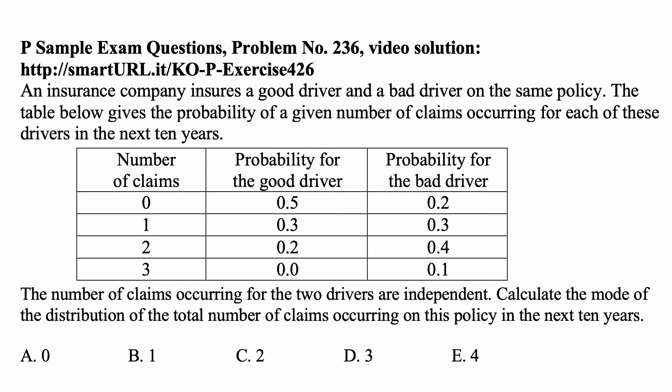If you look at these probabilities here, you can see that they add up to 1 in each column. So these are all the possible numbers of claims for whatever claims happen for each of the drivers.